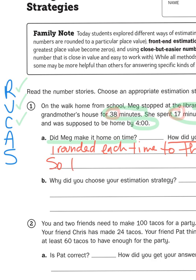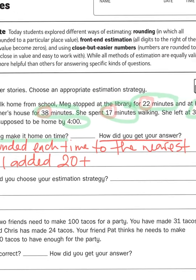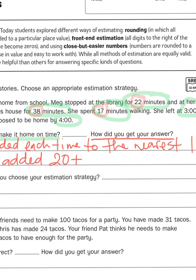So I added 20 plus, now this is where we have to round the other two amounts. Now, when I look at 38 minutes, 38 is closer to 40, because the halfway point would be 35.